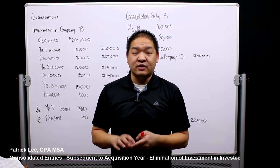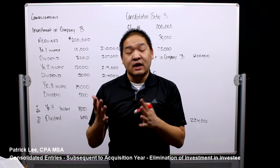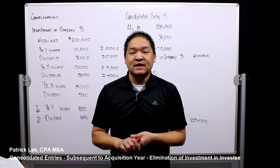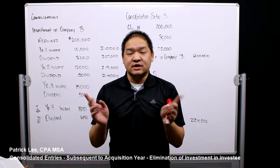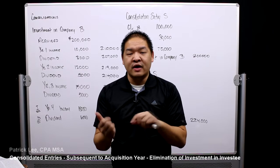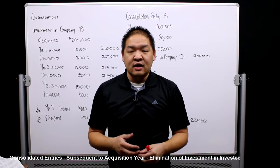If Company B had a book value of $100,000 for equipment and the fair value on the date of acquisition was $160,000, we would consolidate at $160,000. If we're depreciating that additional $60,000 over 10 years, we take an additional depreciation expense of $6,000. The following year, we subtract that $6,000, so when we consolidate, the asset is $154,000 instead of $160,000.